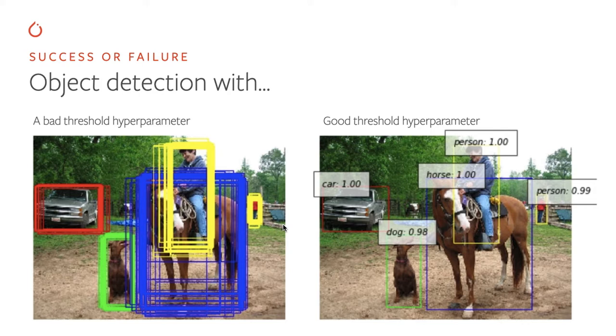Object detection with a bad threshold parameter, you can see on the left, can produce too many bounding boxes in this particular case of the threshold hyperparameter. And with a good threshold hyperparameter it can provide a much more clean resolution where you have one bounding box basically per object.